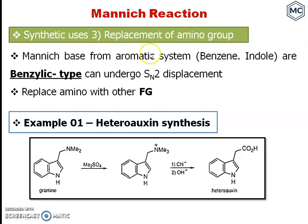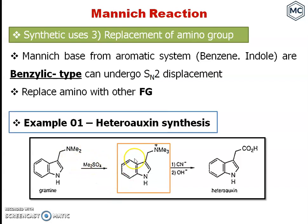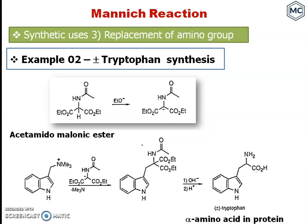You can replace the beta-amino group with other functional groups. Mannich bases from aromatic systems like benzene, indole, or benzylic types can undergo displacement reactions. For example, in Tryptophan synthesis from gramine: first, you methylate gramine and form a quaternized salt. This quaternized salt can be replaced by cyanide, a strong nucleophile, to give a cyano compound. Hydrolysis of this cyano compound gives a carboxylic acid — this product is called Tryptophan precursor.